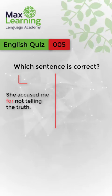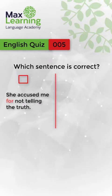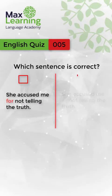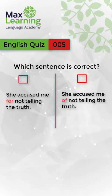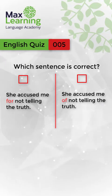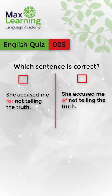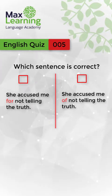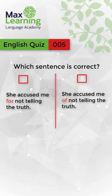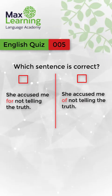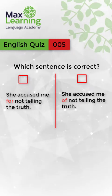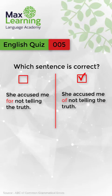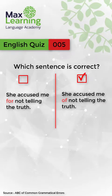Which sentence is correct? Option A: She accused me for not telling the truth. Option B: She accused me of not telling the truth. I'll give you some time to think. The correct answer is: She accused me of not telling the truth.